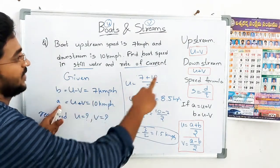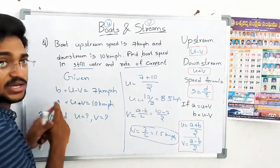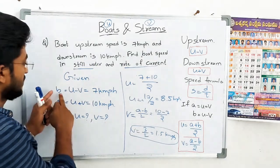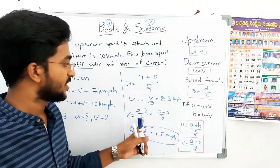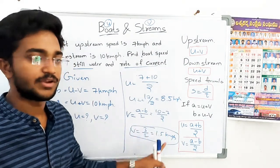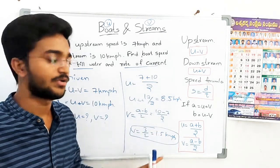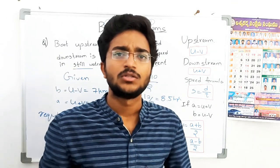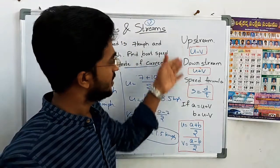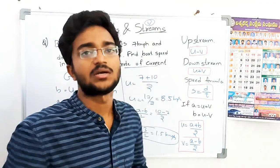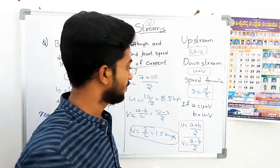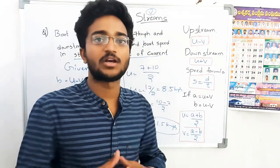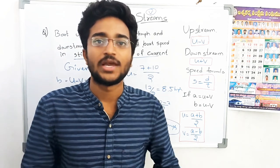We have fixed this problem in our discussion. So A plus B and A minus B are the simple basic formulas. In this way we can solve speed, time, and distance problems involving boats and streams. Next video will cover complex problems. Please like, share, and subscribe.